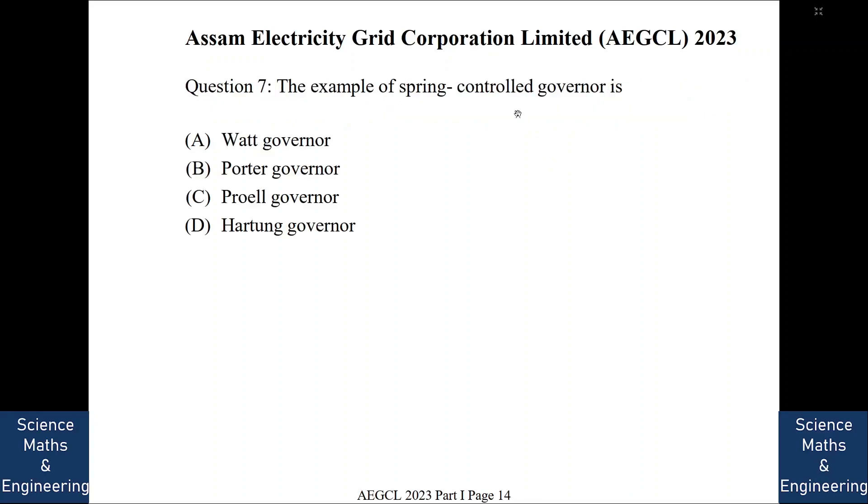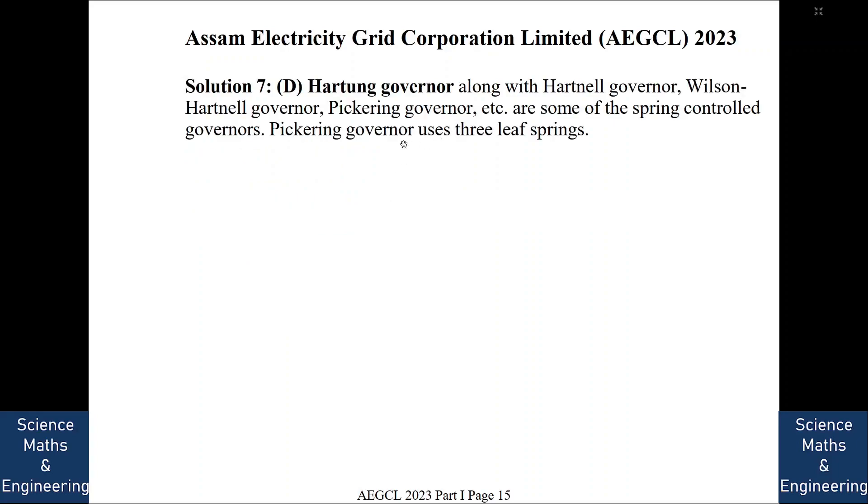The example of spring control governor is, so which is the spring control governor here? So the answer is Hartan governor. And along with Hartan governor, Wilson Hartan governor, Pickering governor, these are all spring control governors. And also Pickering governor uses 3 leaf springs. A similar question was also asked in the APSC irrigation 21 mechanical engineering paper. We will go to the next question.